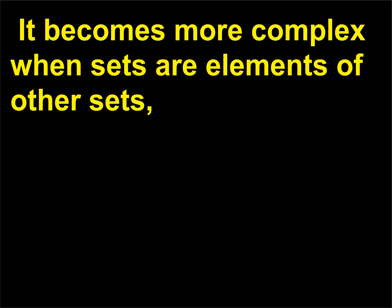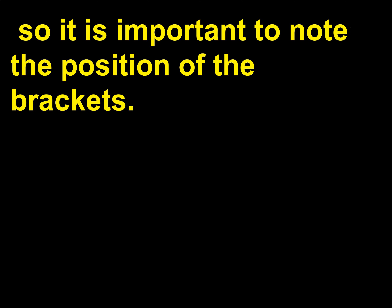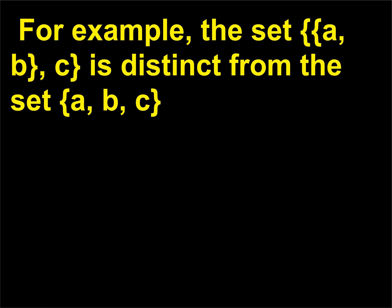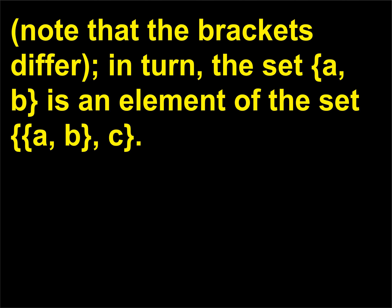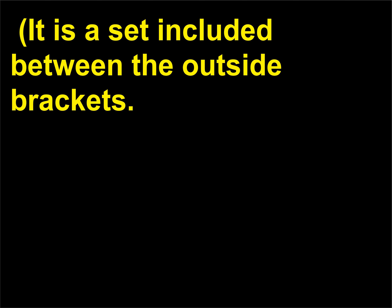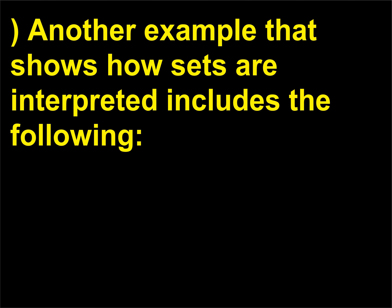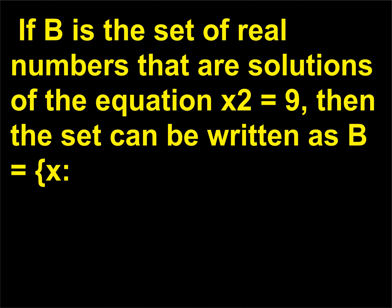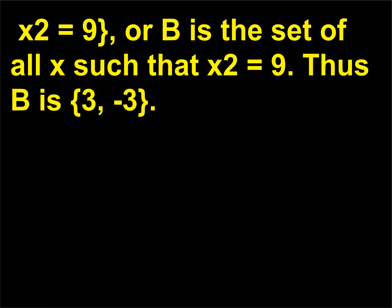It becomes more complex when sets are elements of other sets, so it is important to note the position of the brackets. For example, the set {A, B, C} is distinct from the set {{A, B}, C}. The set {A, B} is an element of the set {{A, B}, C}. Another example: if B is the set of real numbers that are solutions of the equation x² = 9, then the set can be written as B = {x : x² = 9}, or B is the set of all x such that x² = 9. Thus B = {3, −3}.